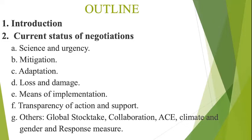Then we'll move on to transparency of actions and support, and then we'll be covering other items briefly — items such as the global stocktake, collaboration, ACE, climate and gender, and response measures. Of course, there are other items being discussed, including the system and network observation, and other items that come under the constituted bodies that have been established — the CGE, the adaptation committee, the Nairobi programme — to mention a few. But I will probably request learners to get further information from the reference made at the end of the study guide.